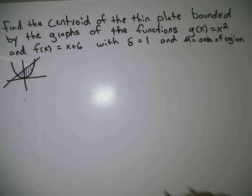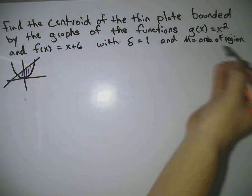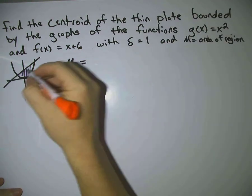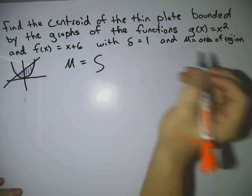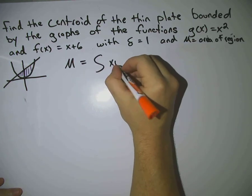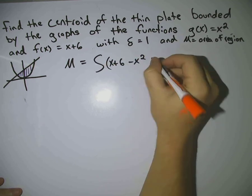The first thing we want to do is find the mass, which it says is the area of the region. So, we're going to find basically the area of this, which would be top minus bottom, so it would be x plus 6 minus x squared dx.